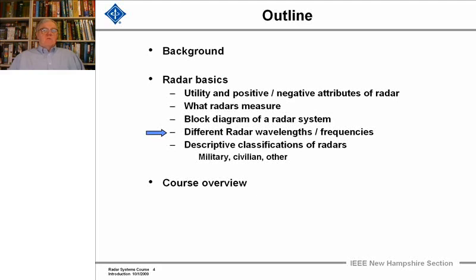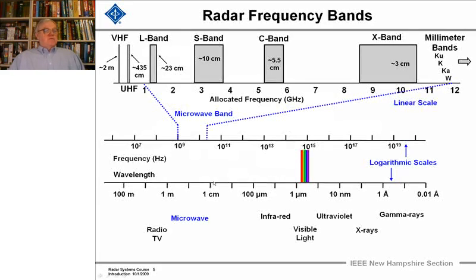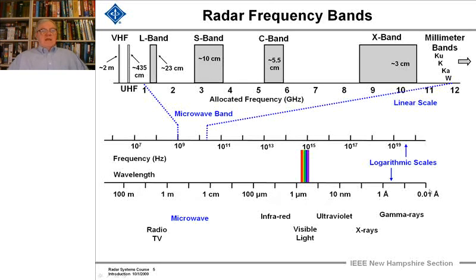Now let's look at one of the interesting characteristics about radars: their wavelength and frequencies. On a logarithmic scale, electromagnetic radiation extends over many orders of magnitude — from wavelengths of 100 meters down to a hundredth of an angstrom. We can see where visible light, infrared, ultraviolet, X-rays, and gamma rays fall. The microwave region is where most radars operate.